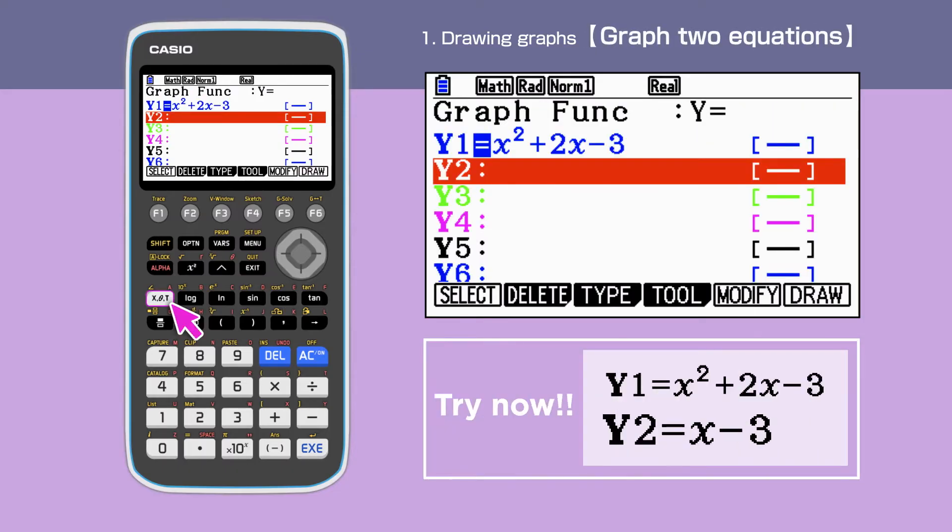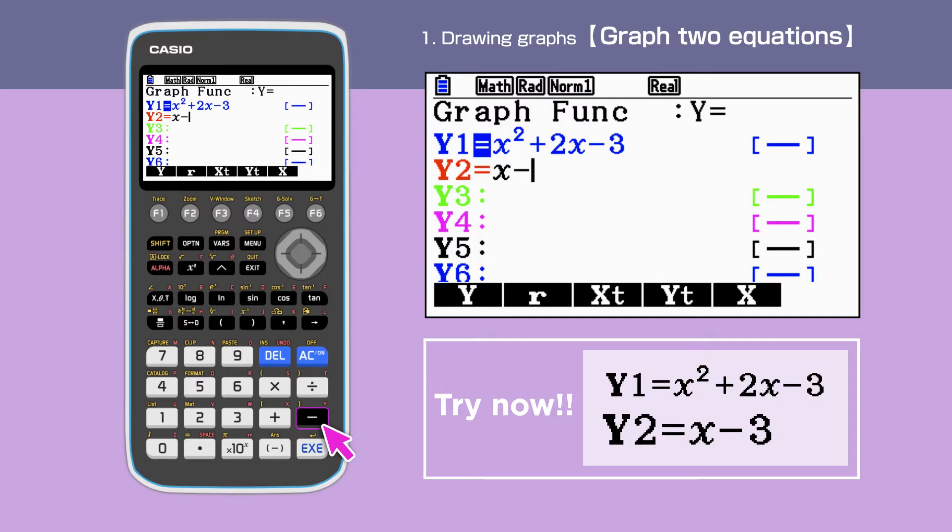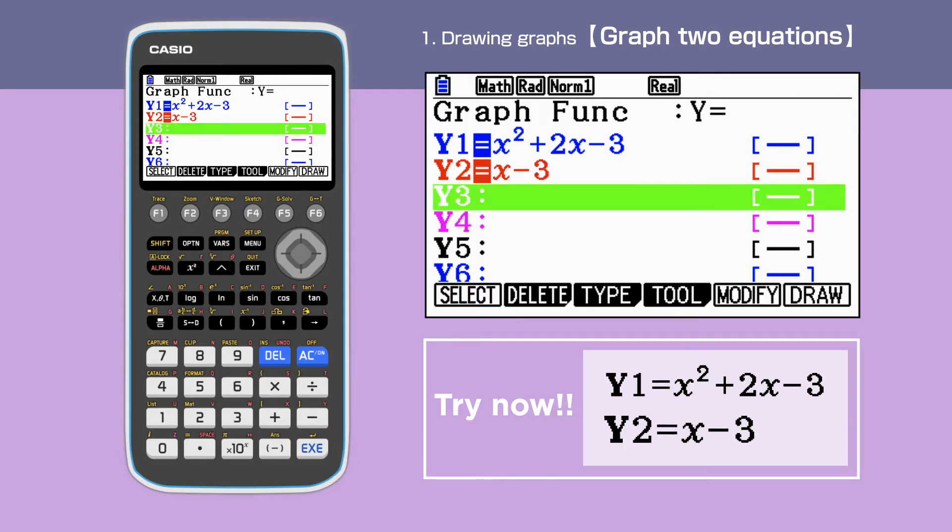This time, we enter x minus 3 in y2. Now, we have two equations highlighted, meaning that the calculator is going to draw two graphs.